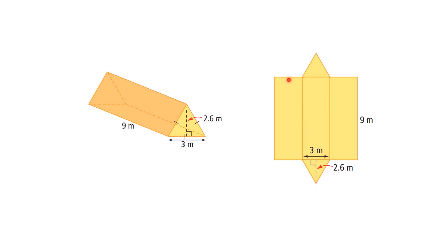Triangular prisms will always have these rectangles — they represent the bottom of the shape as well as the two sides. We have one side, the left side over here, and then on the other side, which we can't see very well, is the right side. So you will always be dealing with two triangles and three rectangles.